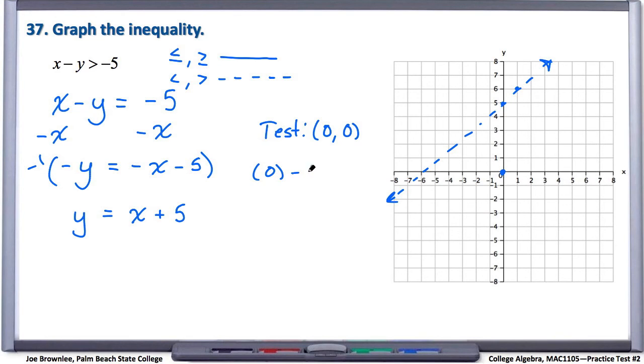So we have x minus y is greater than negative 5. Well, 0 minus 0 is just 0, so we have 0 is greater than negative 5. Is this a true statement? Is 0 greater than negative 5? Yeah, it sure is.